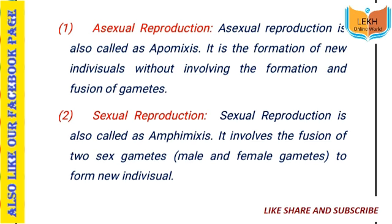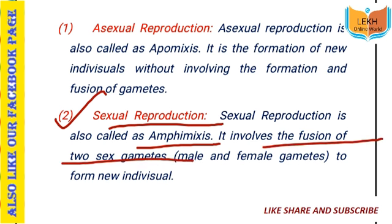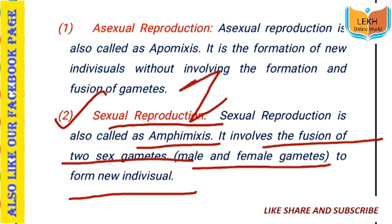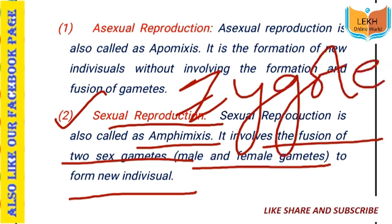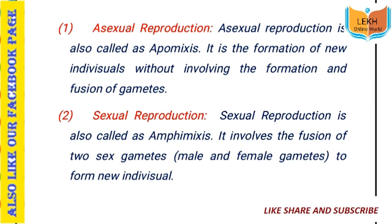Coming to the second type: sexual reproduction. It is the fusion of two sex gametes — male and female gametes. These male and female gametes fuse to form a new individual. After fertilization, an embryo is formed, and from the embryo, a new individual develops. This is how sexual reproduction is carried out.